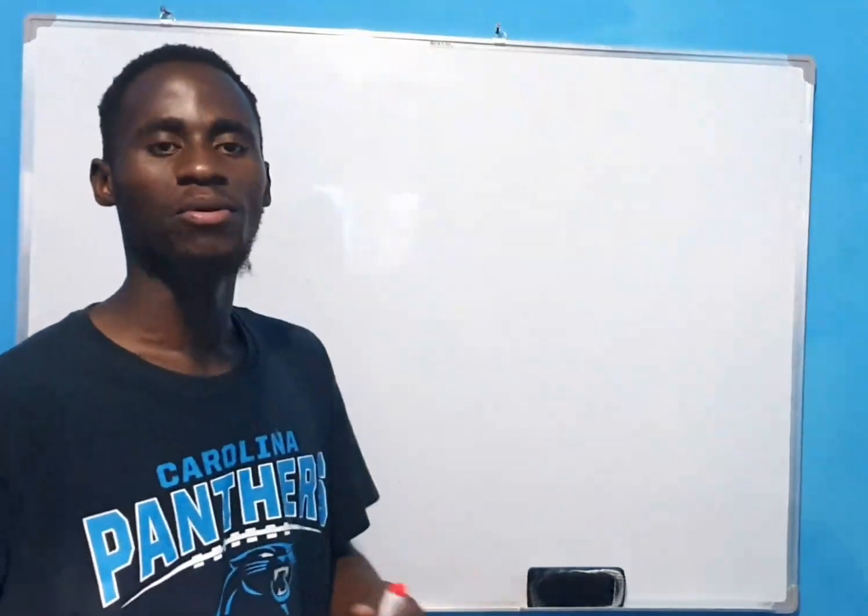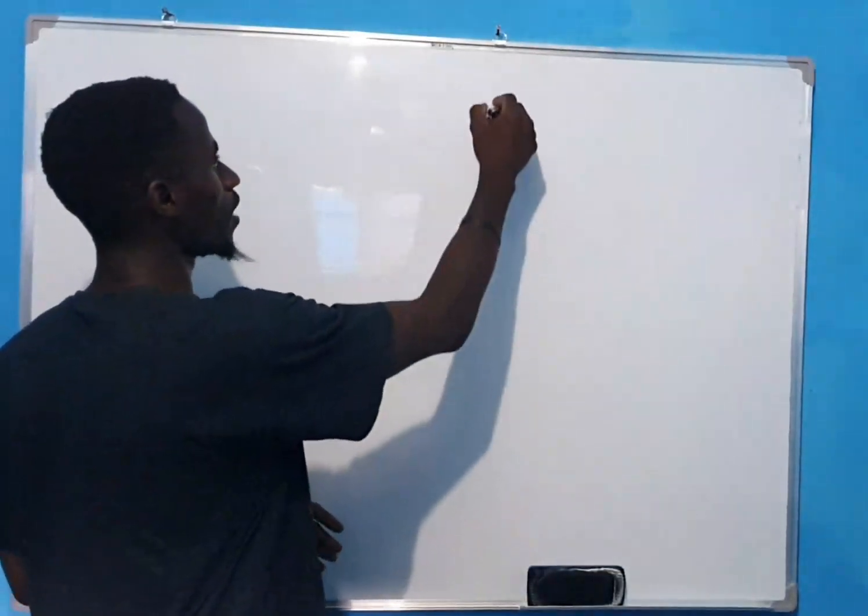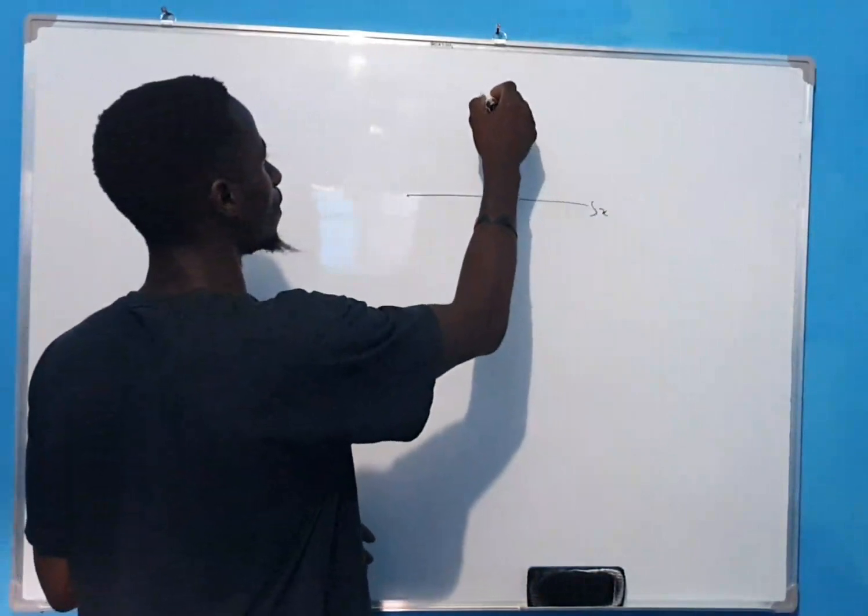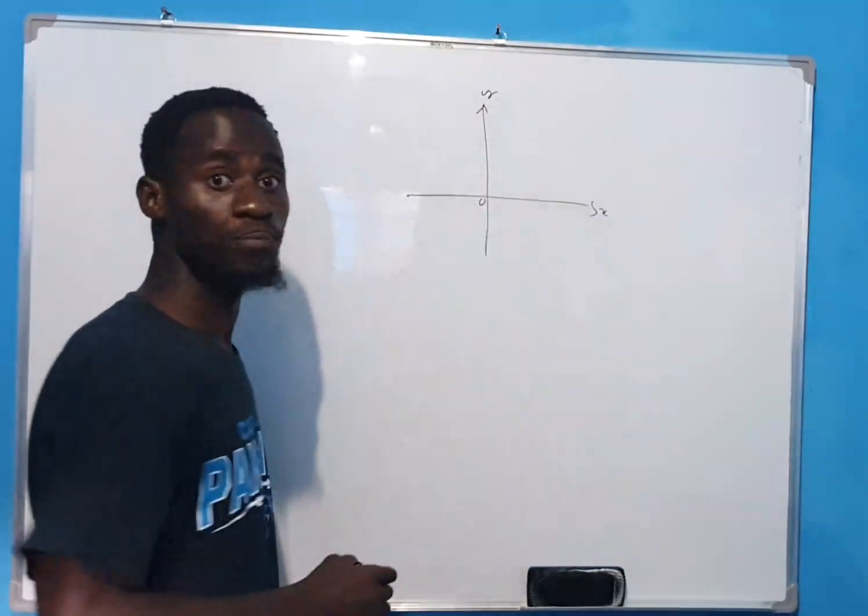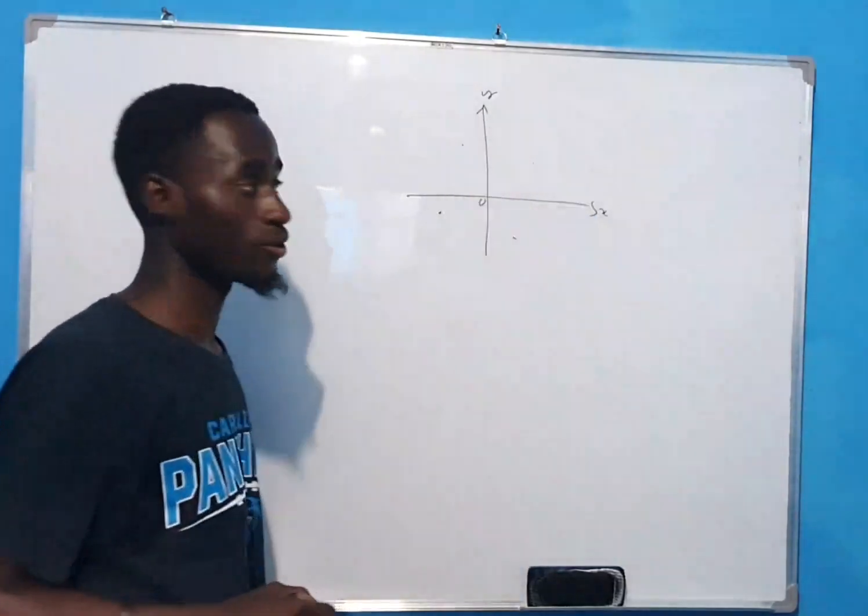Now, we've heard of the word coordinate, right? But what is a coordinate? On the x or y plane, x, y, 0, we have points. Those are coordinates.